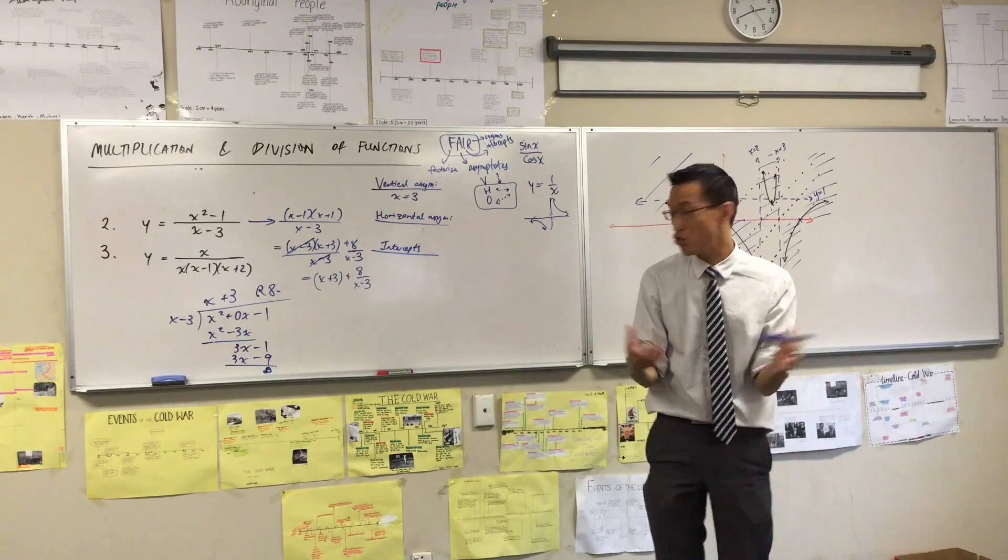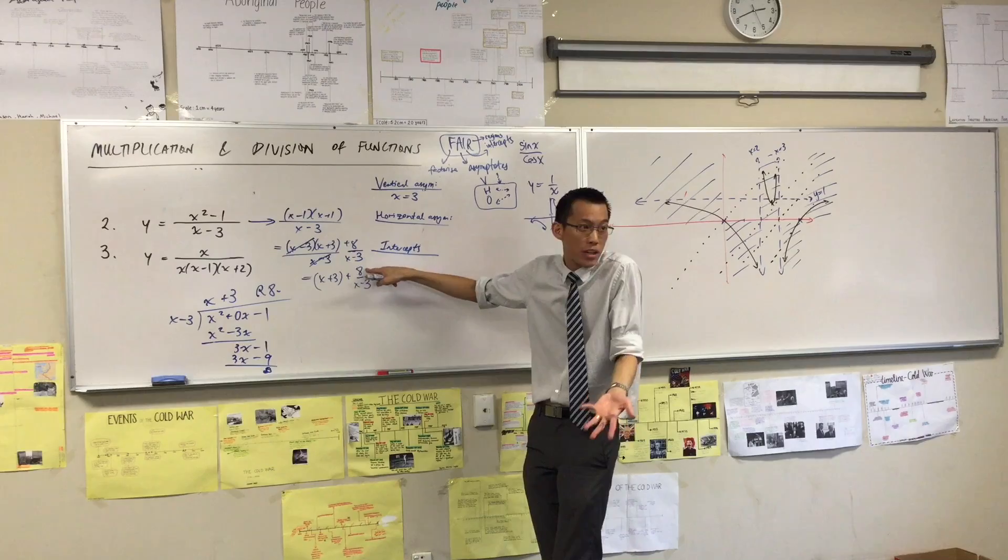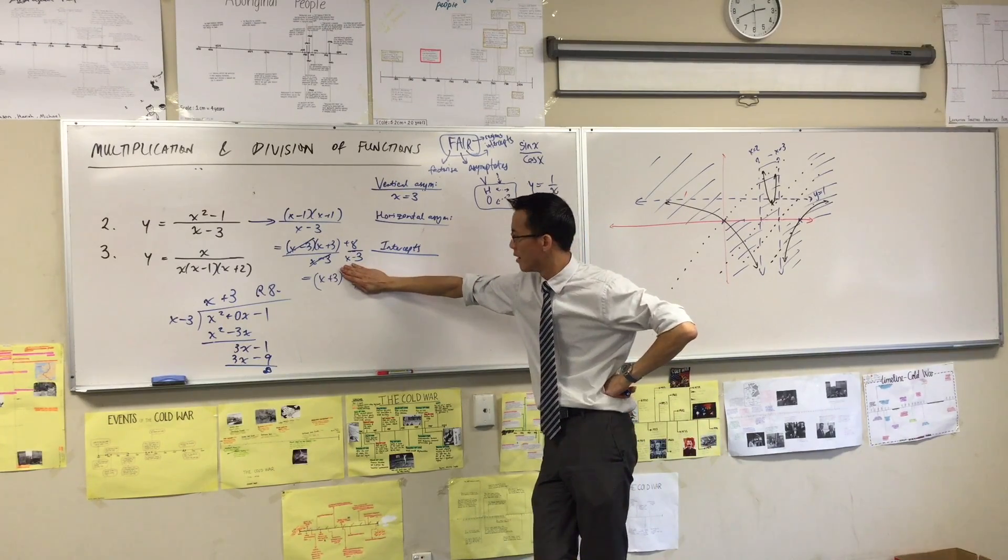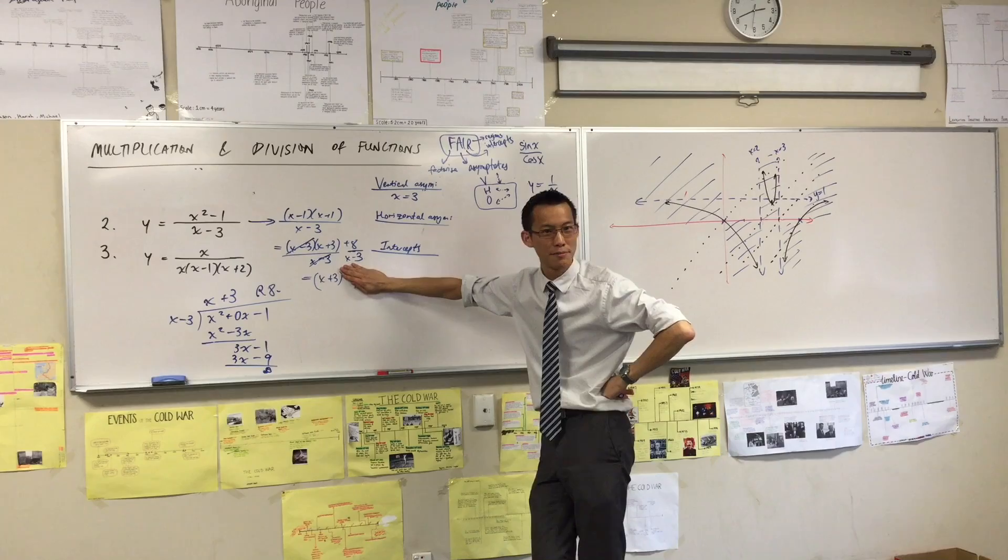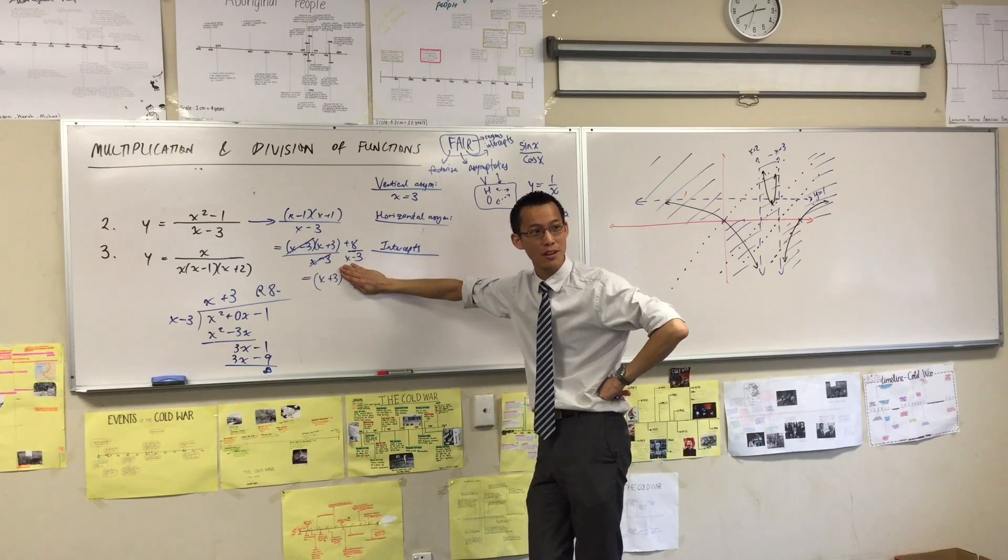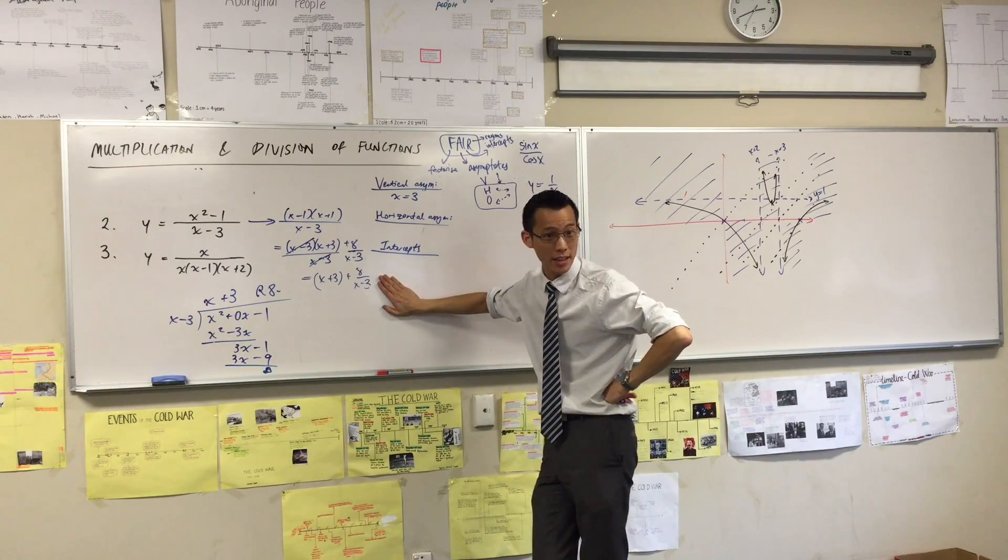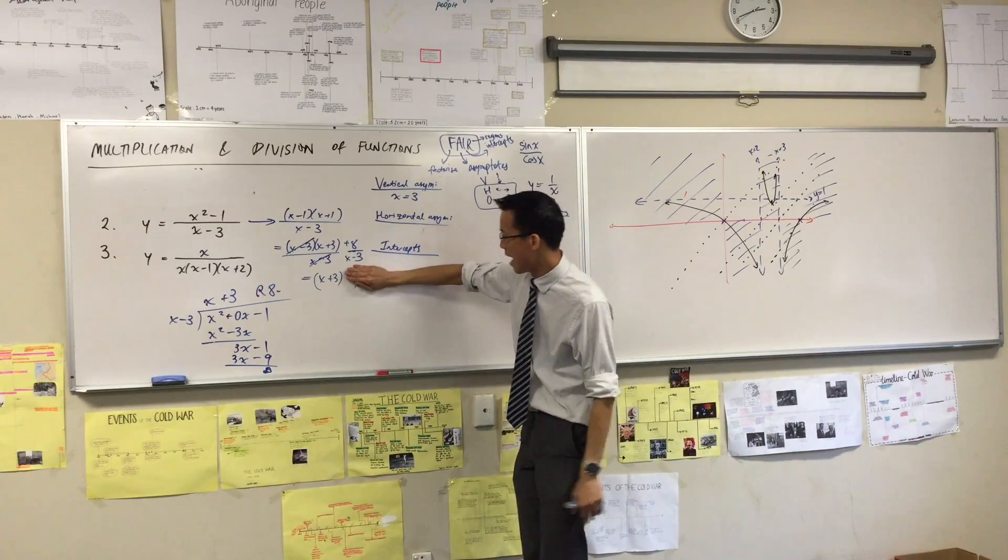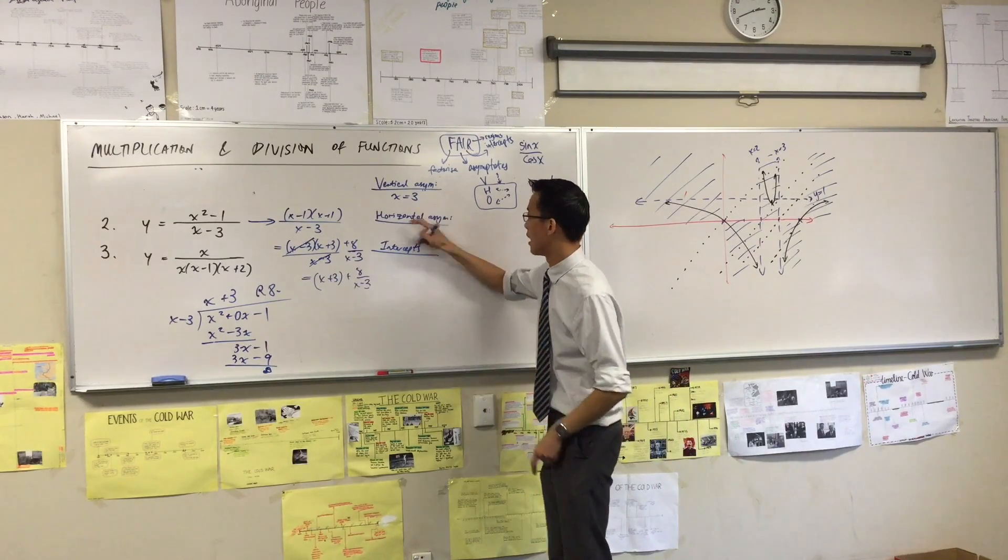This guy here is just vanishing away. The denominator is getting huge, the numerator is just staying what it is. So this guy might as well not be here. So guess what you've got left? There's your oblique asymptote. This thing becomes nothing, which is why you approach.